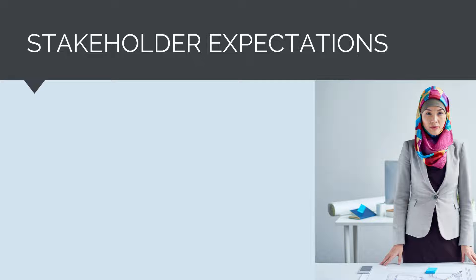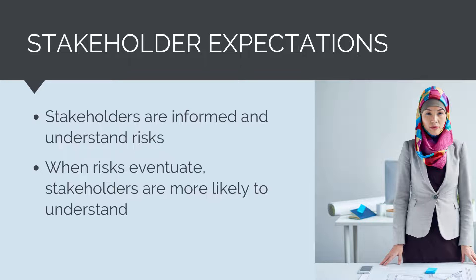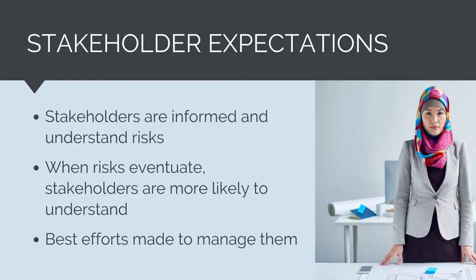Risk management also helps to manage stakeholder expectations. Stakeholders are kept informed and understand project risks. When risks eventuate, stakeholders are more likely to understand rather than blame the project team. If management understands that delayed earthworks productivity from excessive inclement weather is a risk we face and we make them aware of it, when it eventuates, we can clearly justify why the schedule has been delayed and costs have increased. They can clearly see we have made our best efforts to manage a key risk and that it is outside of the project team's hands. This is different to management becoming aware of the problem only when the earthworks is delayed and costs have blown out.